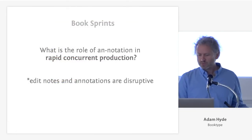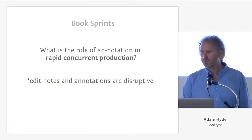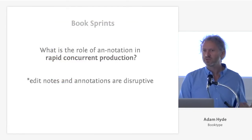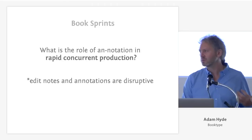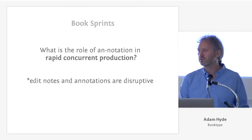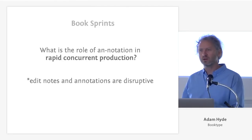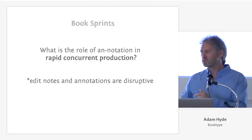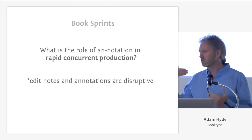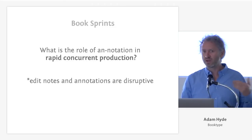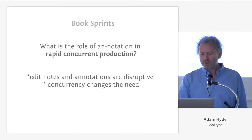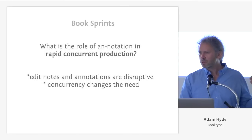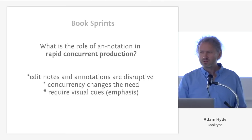In book sprints, rapid production of text — the question of annotating stuff is actually disruptive. It actually slows the process down if you're talking about digital annotations. I want to mark this thing here and then you have to go and look at it, interpret it, and come back to me — this slows the process down. You actually want people to make direct edits as fast as possible. So in this kind of rapid concurrent environment, the needs for annotation change — they require much more shorthand visual cues.